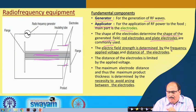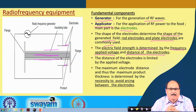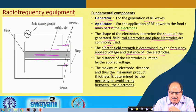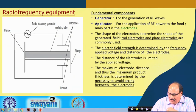The electric field strength is determined by the frequency, applied voltage, and distance of the electrode. The distance of the electrode is limited by the applied voltage — you cannot keep it at a very large distance given the voltage applied, as it must be able to transmit the energy. The maximum electrode distance, and thus the maximum product thickness, is determined by the necessity to avoid arcing between the two electrodes. These are the considerations for deciding the electrode configuration and the heating potential of the process.